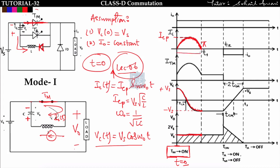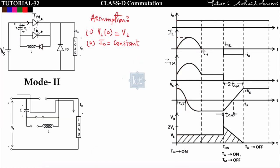From 0 to t1, this is Mode 1. The main thyristor current ITM carries both the load current and the capacitor current: ITM = I₀ + ic(t) = I₀ + ICP·sin(ω₀t). Since I₀ is constant, adding I₀ and ic(t) gives the ITM waveform, which is I₀ + ICP·sin(ω₀t) from 0 to t1.